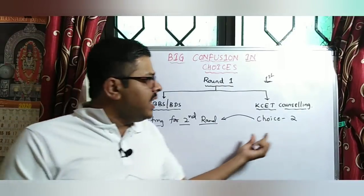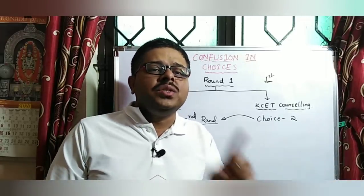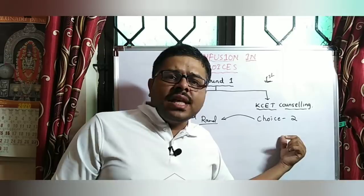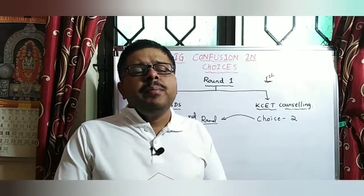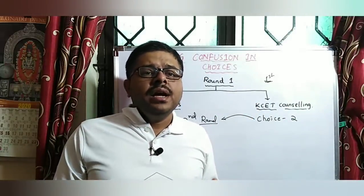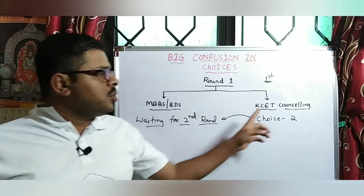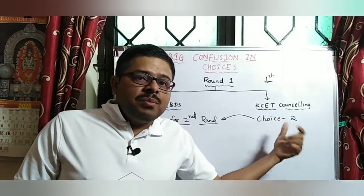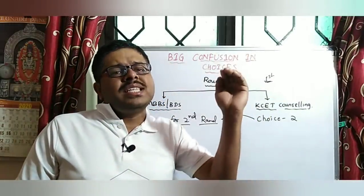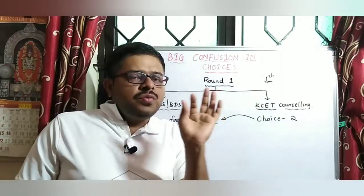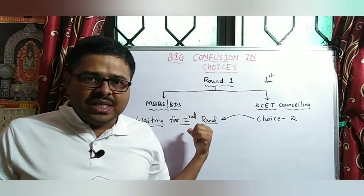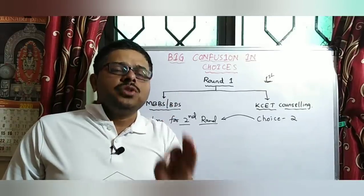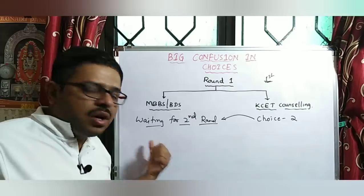At the end of round two, you will have that particular college with you. For example, if the 5th college in your preference list is allotted, and you want to take a chance in MBBS, select Choice 2 and reorder — put the top 4 colleges above it so you remain eligible. If a better college is not allotted, that 5th college remains with you. That is the MBBS second round strategy.